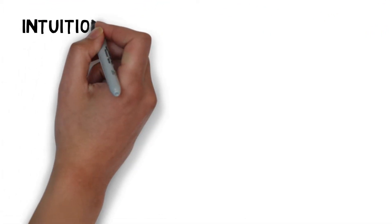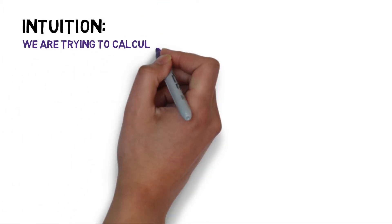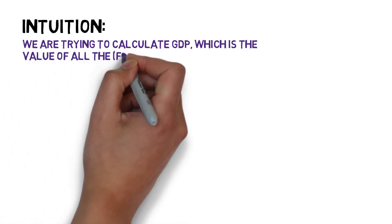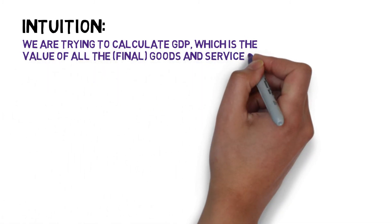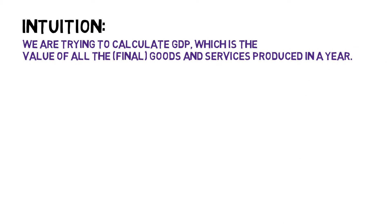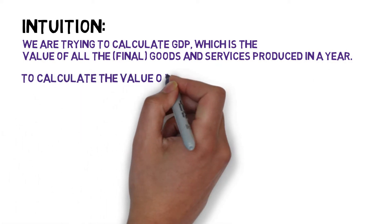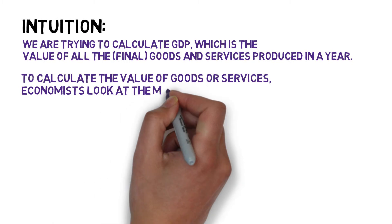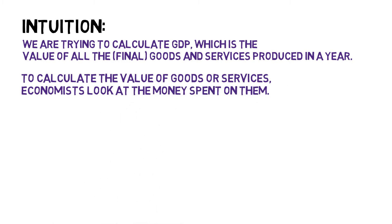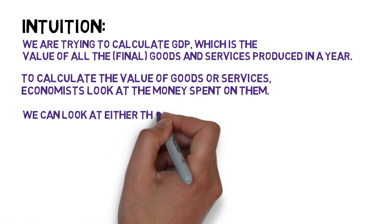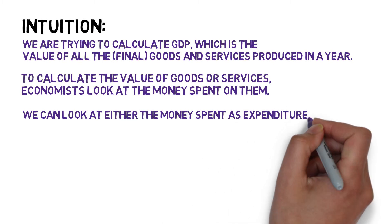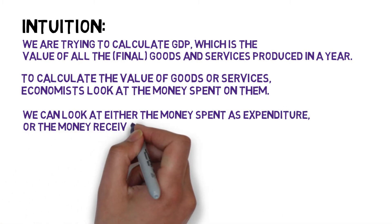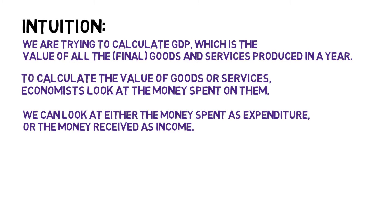So let's start with some intuition. We're trying to calculate GDP, which as you might recall from our previous video is the value of all the final goods and services an economy produces in a year. To calculate the value of the goods and services, economists look at the money spent on those goods or services. We can look at either the money spent as expenditure on those goods and services, or alternatively the money received as income in exchange for those goods and services.